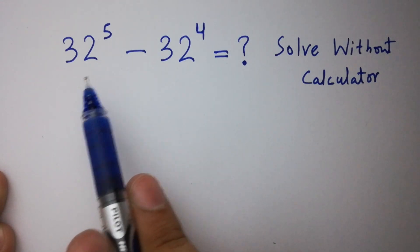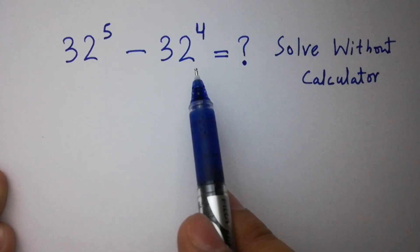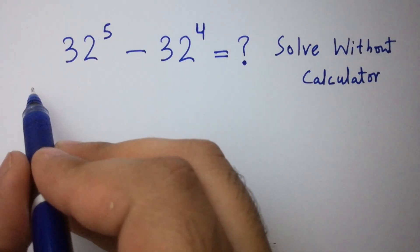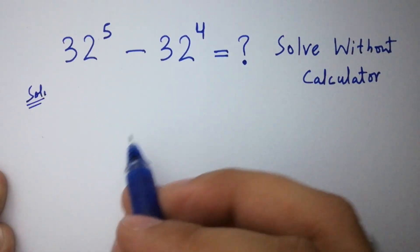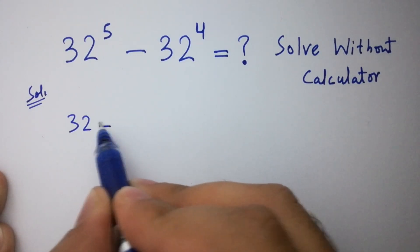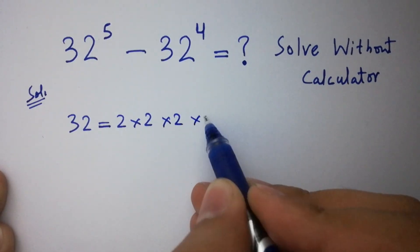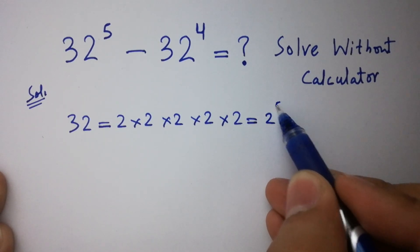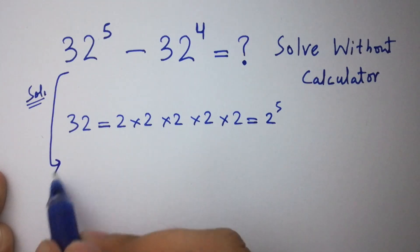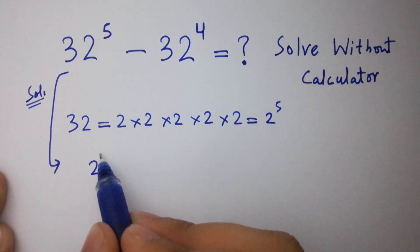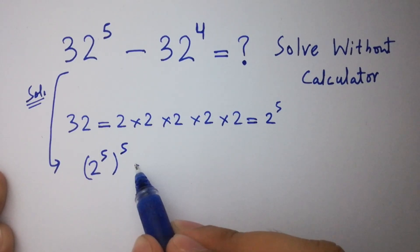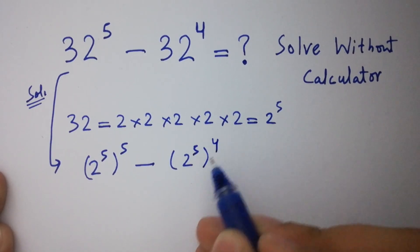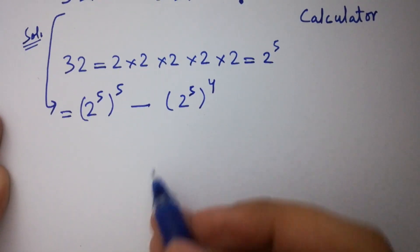Hello friends. 32 to the power 5 minus 32 to the power 4 equals what? Let's solve without a calculator. Since 32 equals 2 times 2 is 4, times 2 is 8, times 2 is 16, times 2 is 32, which equals 2 to the power 5. So it becomes 2 to the power 5, to the whole power 5, minus 2 to the power 5, to the whole power 4.